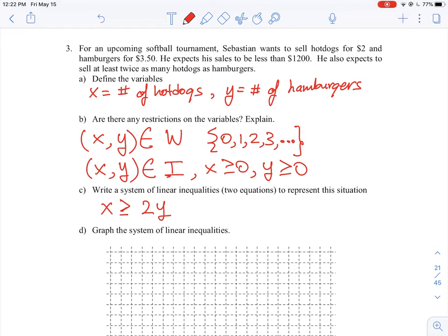And then the second equation is just a simple sales equation. So he is selling hot dogs for two dollars each, so that's 2x. That's the value of the hot dogs being sold. Plus three dollars and fifty cents times the number of hamburgers. So that's the value of the hamburgers being sold. And he expects the sales to be less than twelve hundred dollars. So it could be equal to twelve hundred but it has to be less than or equal to twelve hundred in this case. So there are two equations here: number one and then number two in terms of what we have to plot and graph.